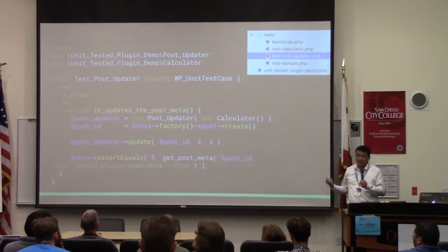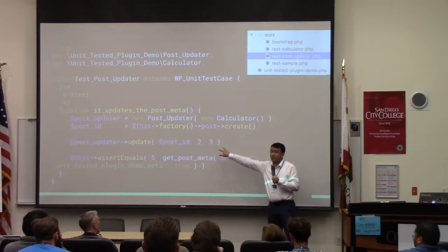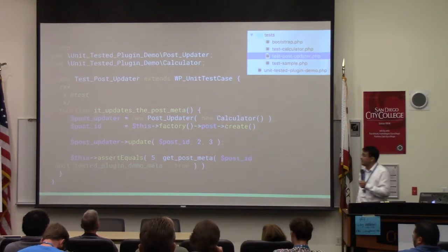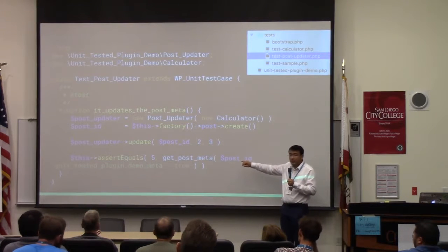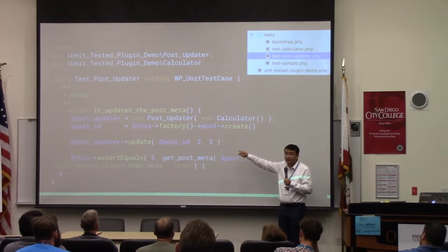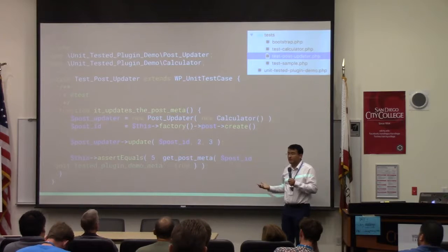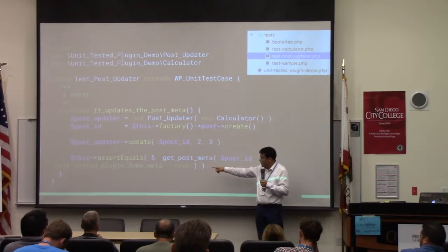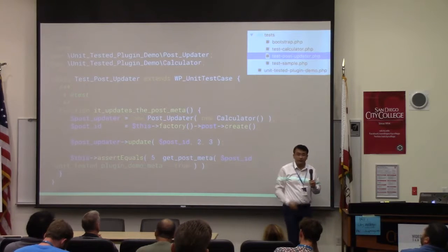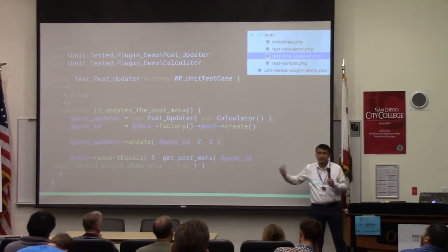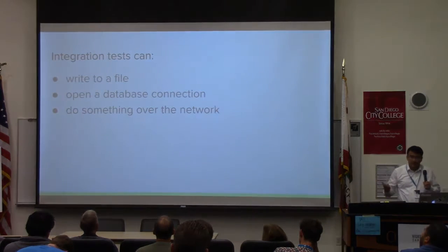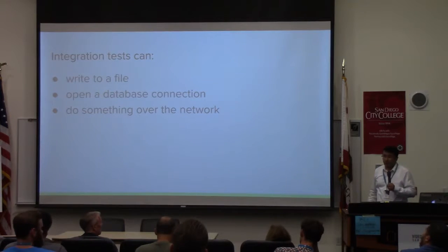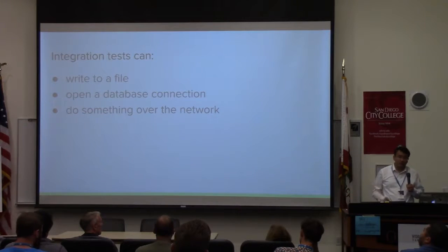We expect this code will add those two numbers and update the post meta. We can write an assertion here — I'm reading the post meta now. I'm not checking the return value of the function, since it doesn't return anything. I'm checking what it did, whether it did the job I expected it to do. I'm reading the post ID and meta key, then asserting it's equal to 5. If you're writing to a file, opening a database connection, or doing something over a network, those tests are most likely integration tests.